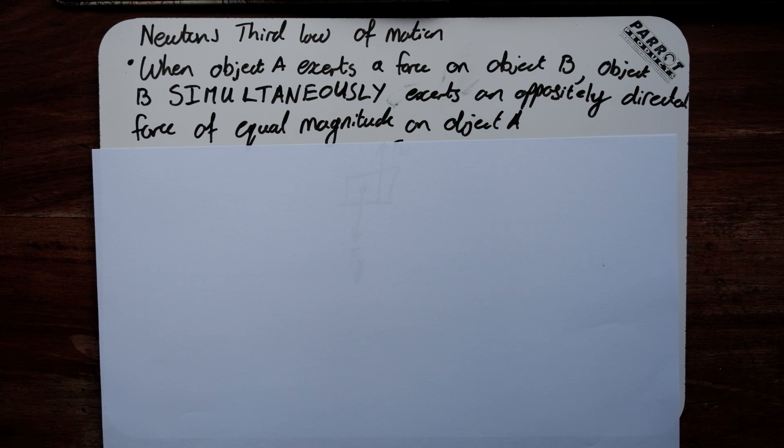Now let's unpack this statement a little bit. We have two objects currently in our system, object A and object B. If object A exerts a force on object B, meaning let's say object A is you, object B is a wall.